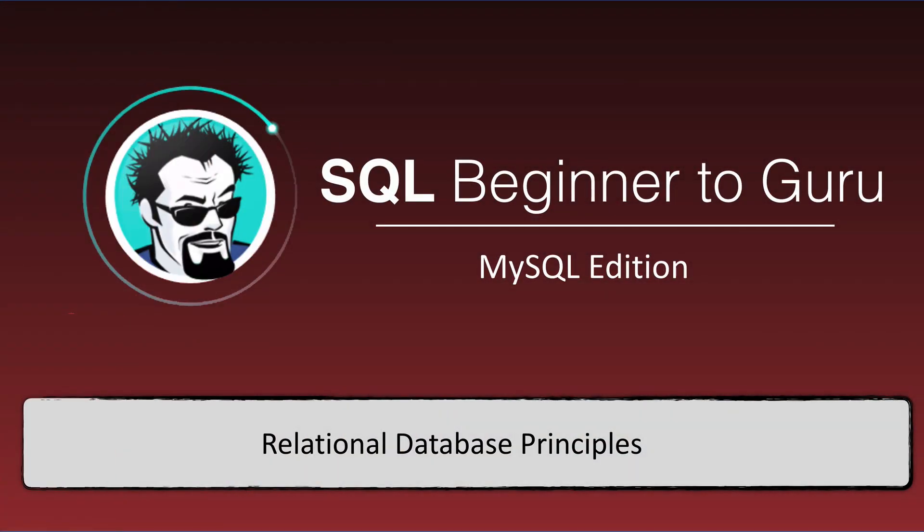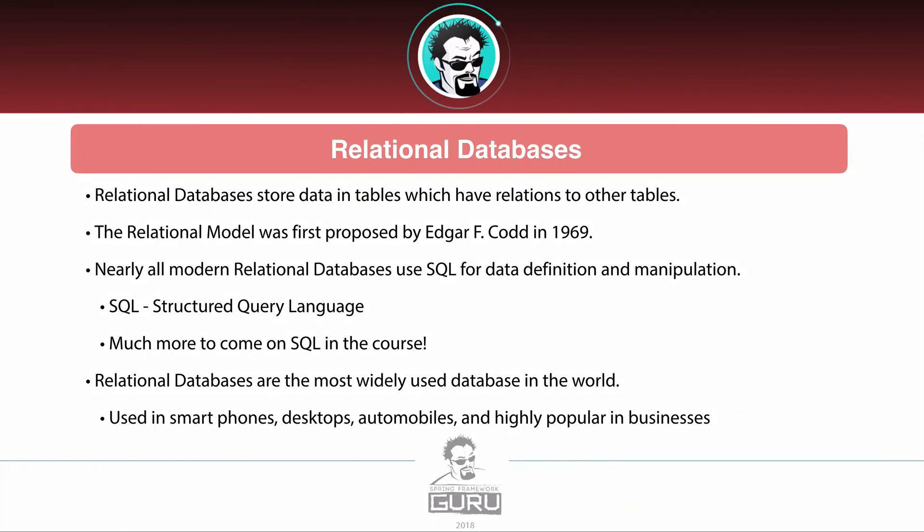In this video we are going to look at some principles of relational databases. I want to get some common terminology established. Relational databases use database tables to store data, and these tables have relations to other tables. This is based on a relational model that was first proposed by Edgar F. Codd in 1969, so this concept has been around for a very long time.